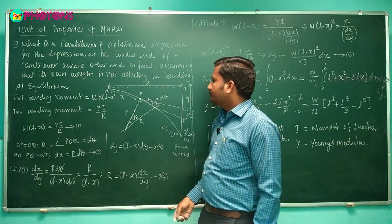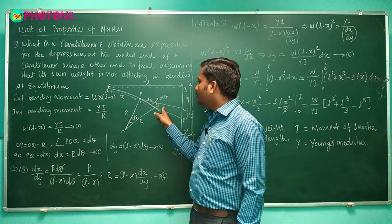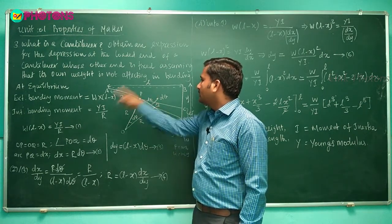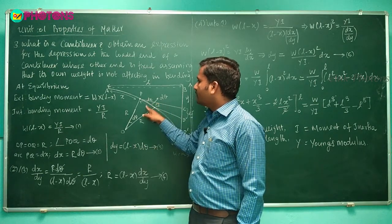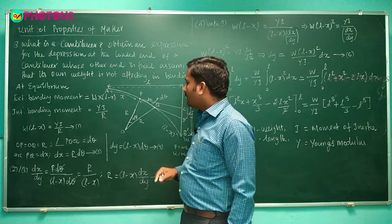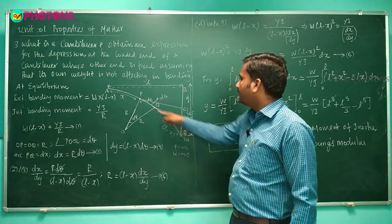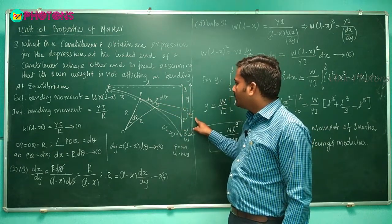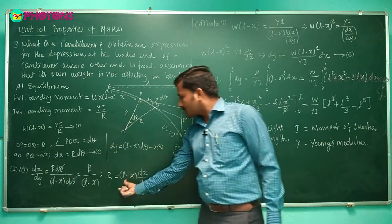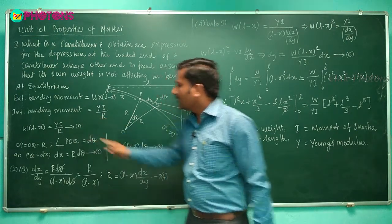We calculated dx using dθ and R, and also calculated dy by extending tangents to the vertical line. From dx and dy, we obtained the expression for R, which is present in Equation 1. We substituted that R into Equation 1 and rewrote the equation for dy.